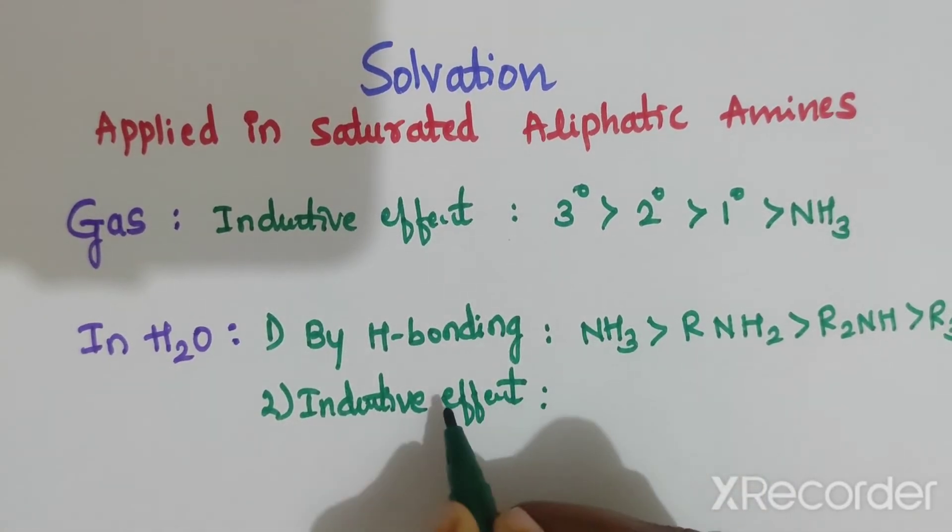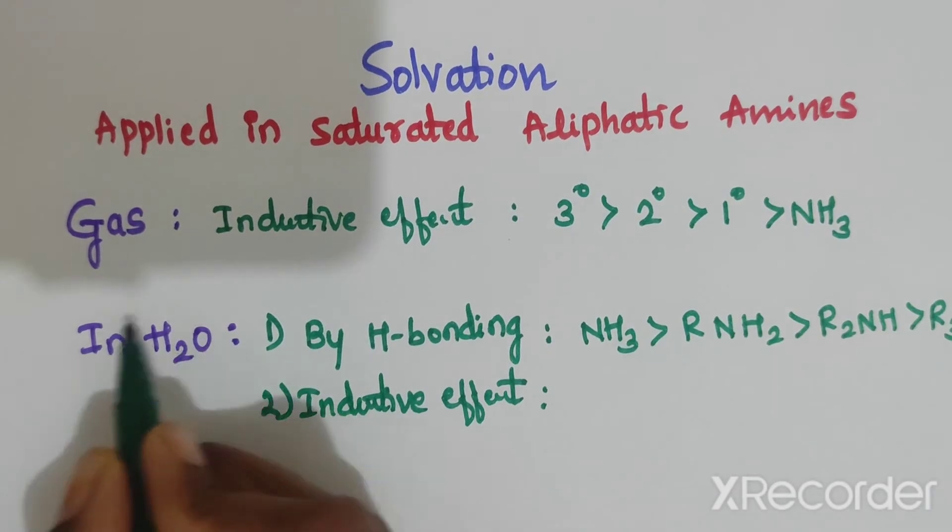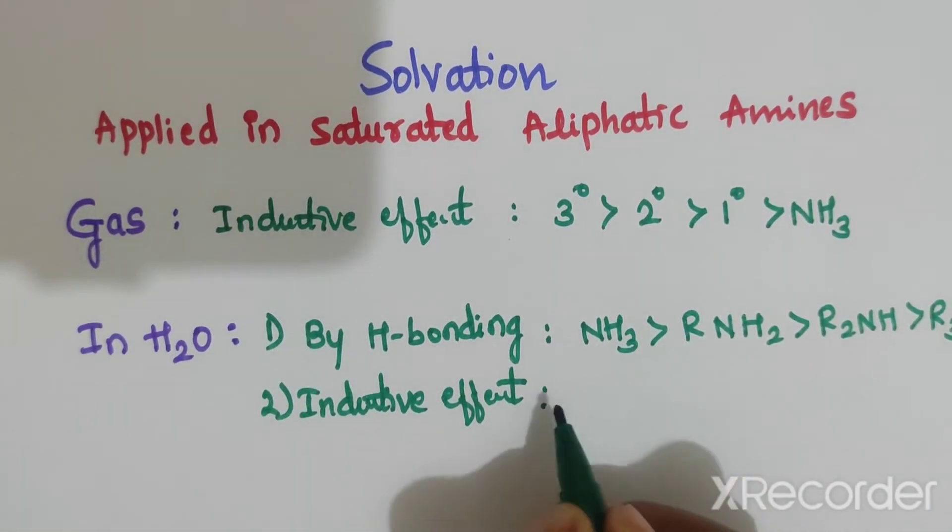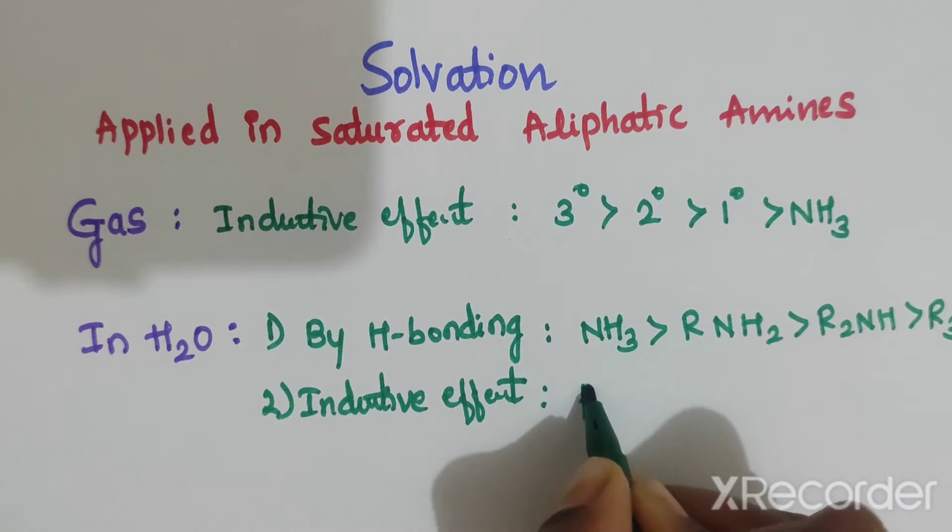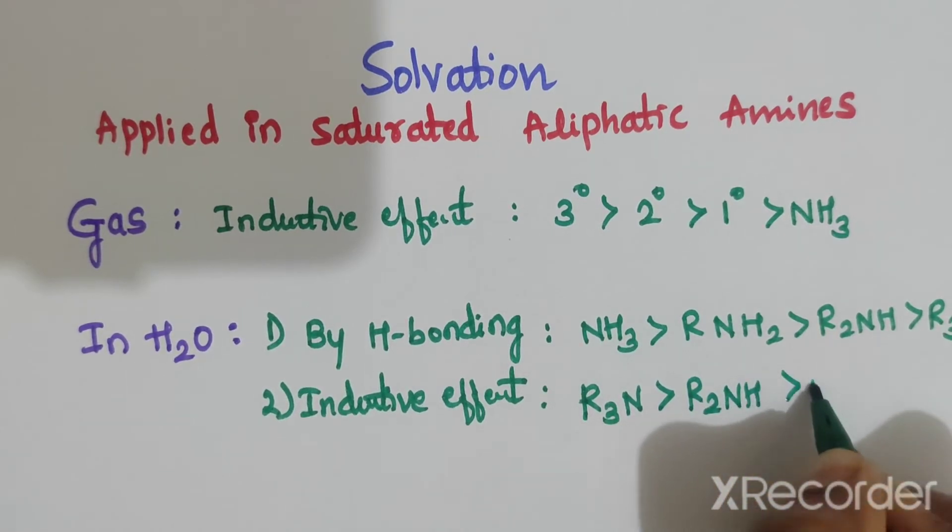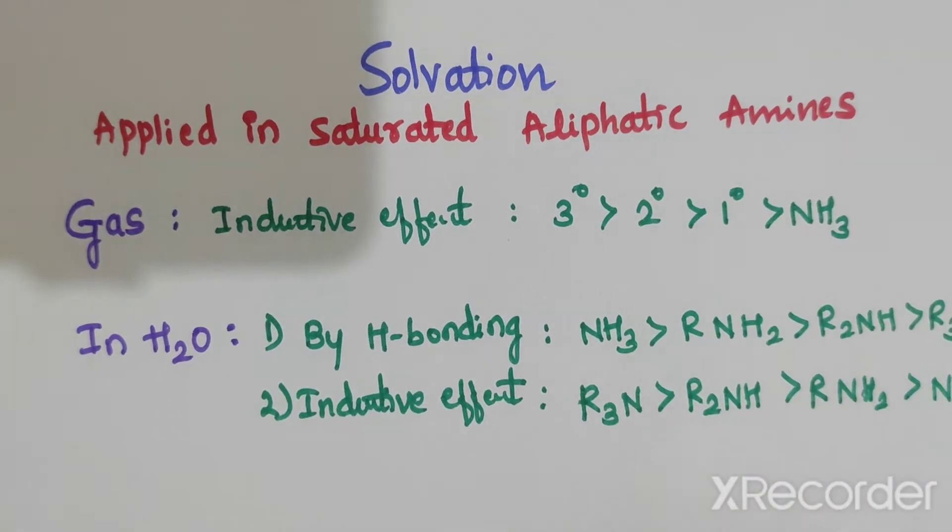In case of inductive effect, when we are adding amines in water, here the basicity order is R3N, which is more basic than R2NH, and which is more basic than RNH2, and this is ammonia.